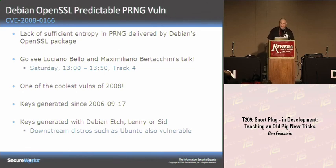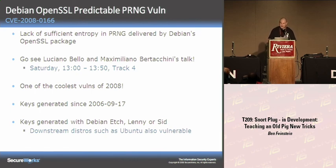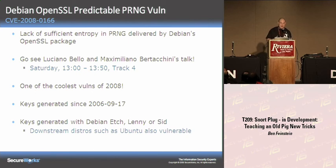The next plug-in is a little more interesting. I'll give a quick background on the Debian OpenSSL random number generator — please go see Luciano Bello and Maximiliano Bertaccini's talk tomorrow afternoon; they discovered this vulnerability. I personally think it's one of the coolest vulns of 2008. Keys generated using this bad code since around September 2006 can be predicted — there's no real entropy in the random number generator other than the process ID. That bad code made its way from unstable Debian to testing to stable, into Debian Etch and also Ubuntu.